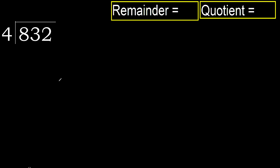832 divided by 4. 8 is not less, therefore start with 8. 4 multiplied by which number is nearest to 8 but not greater? 4 multiplied by 3 is 12 — 12 is greater. 4 multiplied by 2 is 8. 8 is not greater.